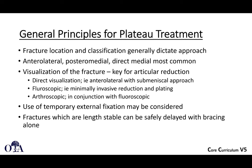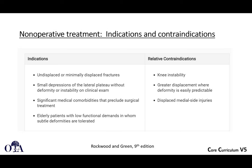Temporary external fixation is frequently used, and we'll talk a lot more about that now. It's frequently used in length-unstable and bicondylar patterns, but fractures that are length-stable can usually be preliminarily treated with things like bracing and splinting.